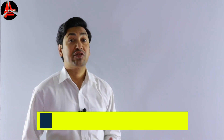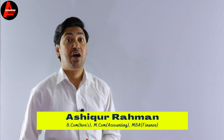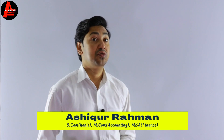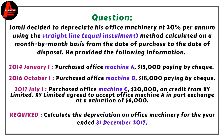Today I'll show you how to calculate depreciation when you have multiple assets. This question is taken from a Cambridge IGCSE Accounting past paper. Jamin started the business on 1st January 2014. He decided to depreciate his office machinery at 20% per annum using the straight-line method, calculated on a month-by-month basis from the date of purchase to the date of disposal.